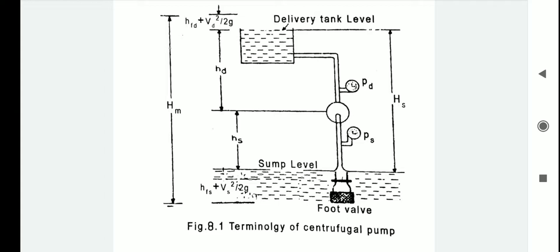Manometric head is denoted by caps HM, which equals (u2 × Vu2) / g minus losses of head in the impeller and casing, which equals HC minus losses. Also, HM equals hs plus HD plus HFS plus HFD plus Vd² / 2g. Here HFS and HFD are the frictional losses due to friction in the suction and delivery pipes, and Vd is the velocity of the fluid in the delivery pipe.